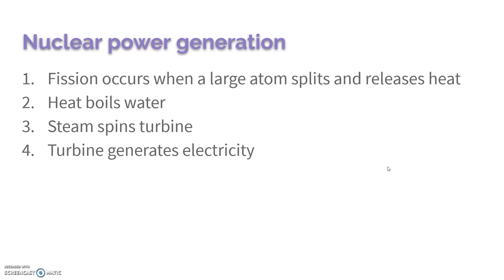To summarize: fission occurs when a large atom splits and releases heat. That heat boils water, that water turns into steam, the steam spins the turbine, and the turbine is what generates electricity.